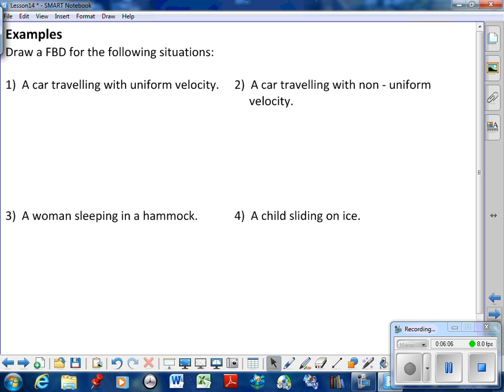So, some examples. I want to go through a couple of examples here. And I want to draw a free body diagram for the following situations. Car traveling with a uniform velocity. So, what do we have? The car being represented by a dot. If the car is on the planet Earth, it's under the influence of gravity. So, it will have a force due to gravity. Now, if I push down with this force due to gravity, and nothing stops that force, that means my car is traveling into the Earth.